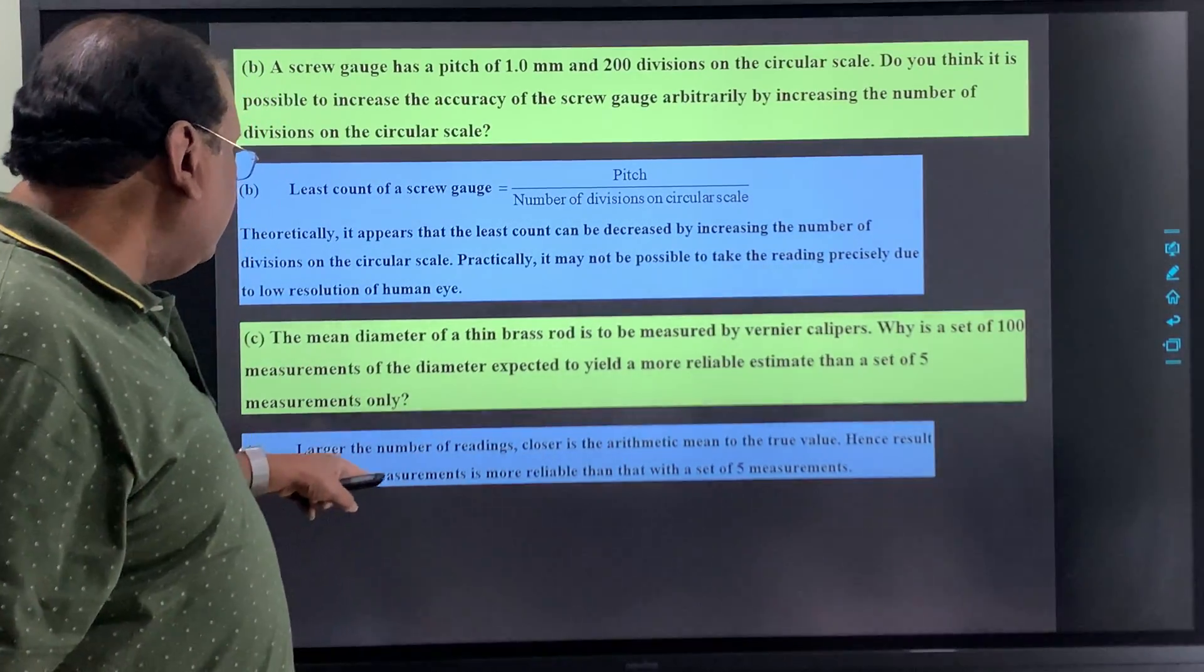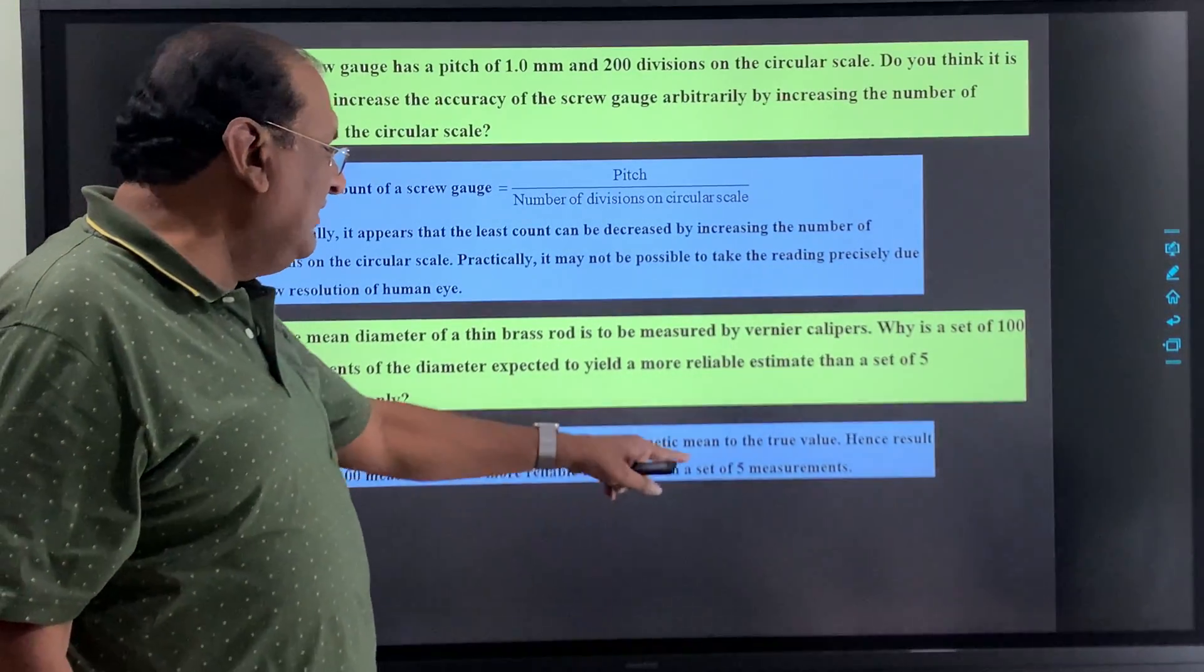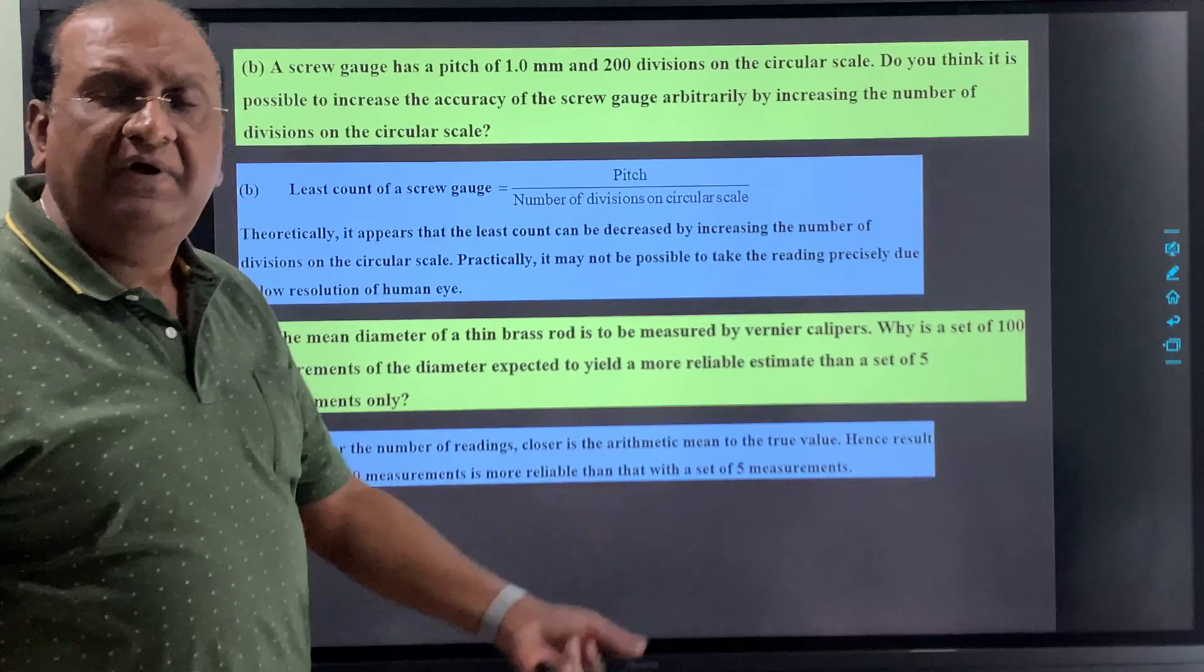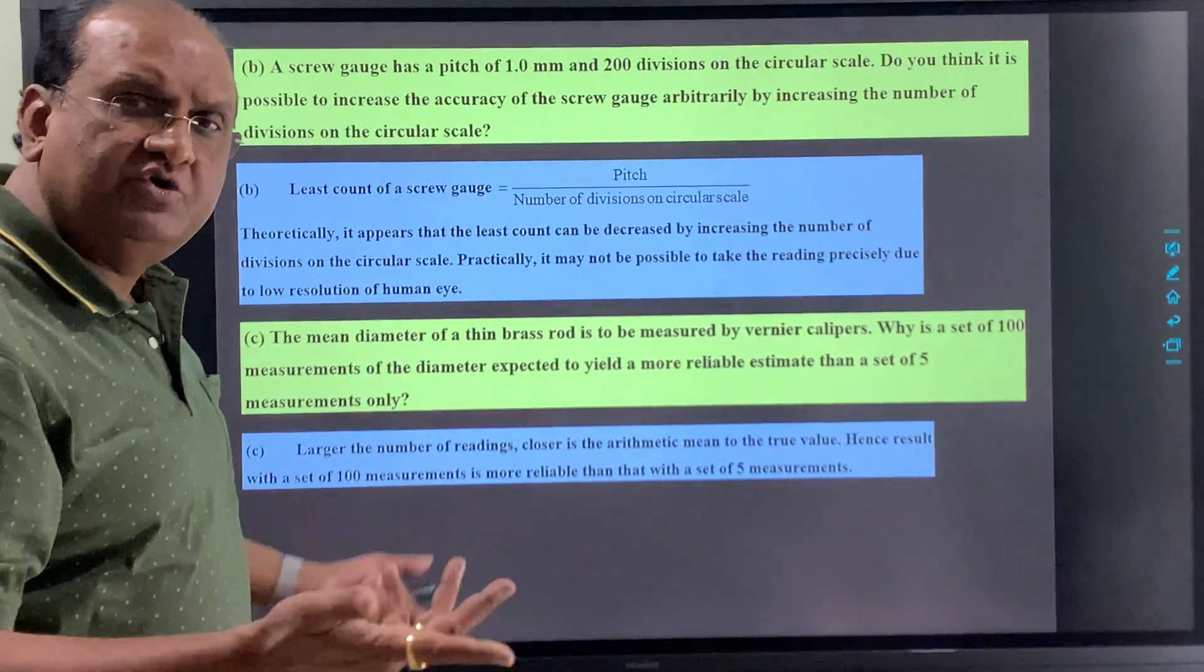So here, hence result with a set of hundred measurements is more reliable than that with a set of five measurements. Clear, simple thing.